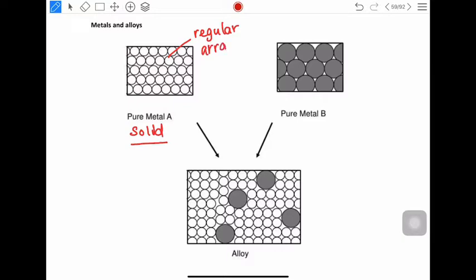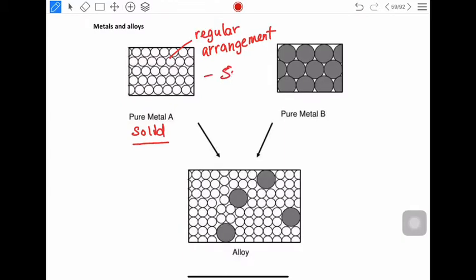It allows the pure metal to be very soft, malleable. Malleable means that when you apply a force, because the particles are regularly arranged, it will allow the particles to slide over each other. When they slide, they're able to change shape without breaking.